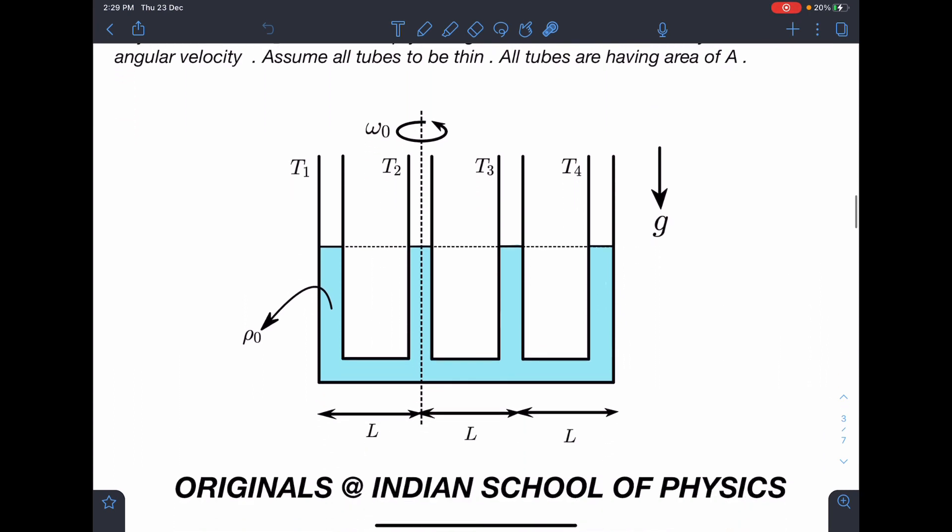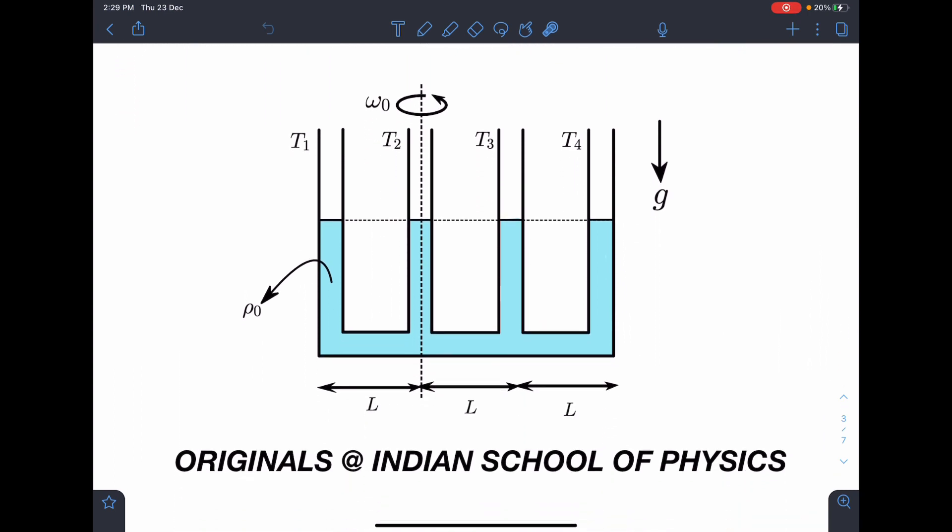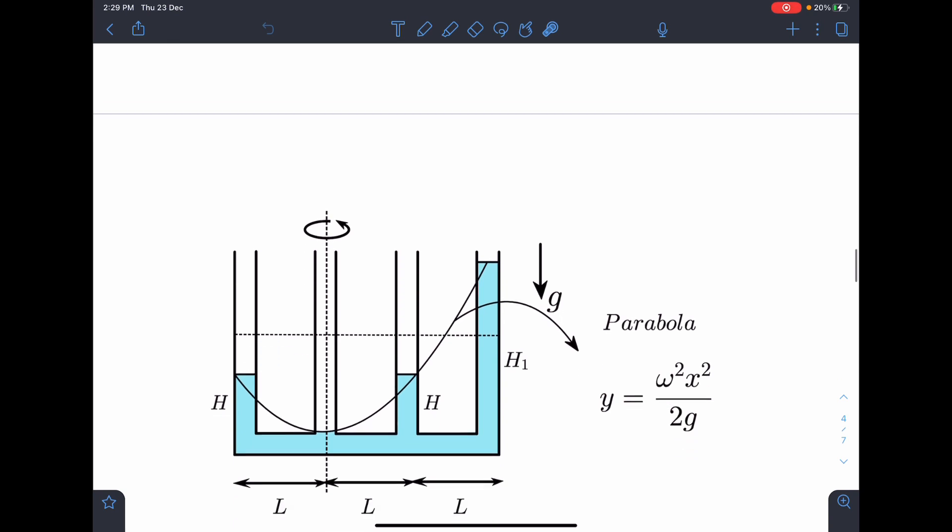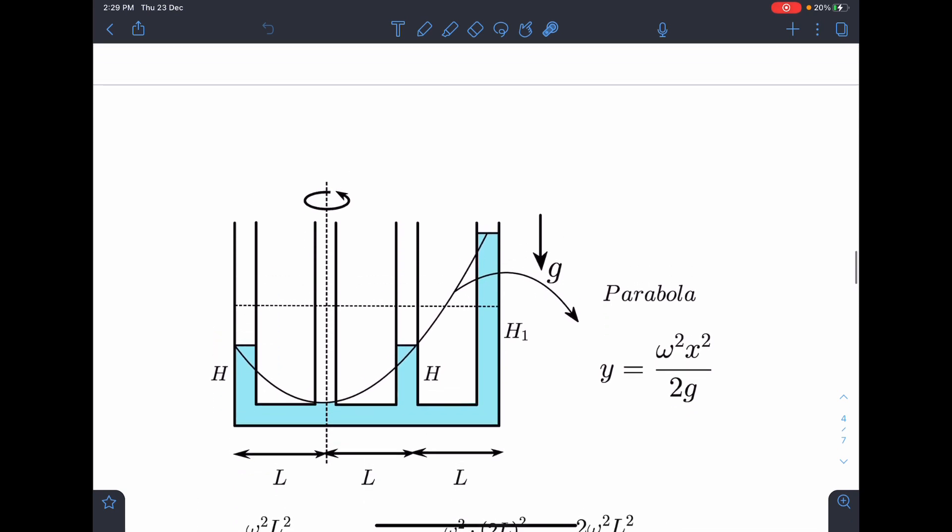So this is the setup here and we will be solving it using a concept where this makes it slightly easier. So let's discuss that concept part here first. So when we rotate liquid in a container, it takes the shape of a parabola.